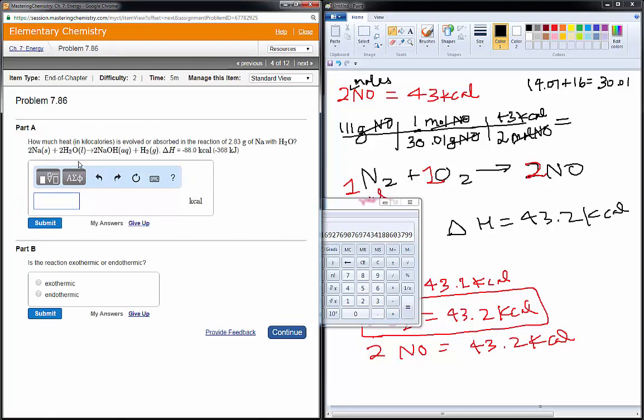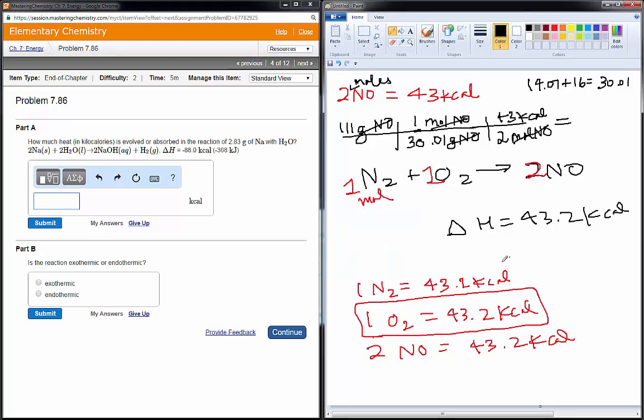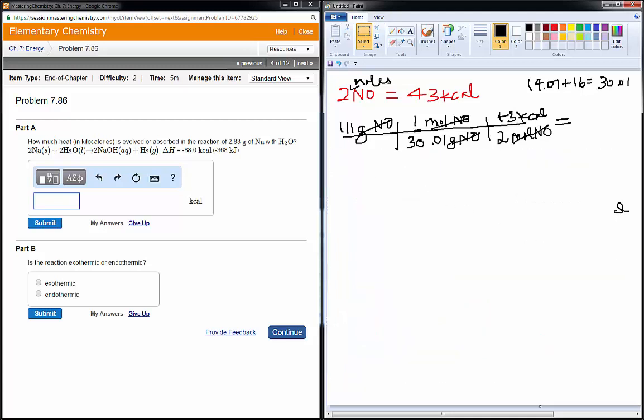Next, same kind of story. They want to know how much heat is evolved or absorbed in the reaction. When 2.83 grams of sodium react with water, they give us the equation, they give us the delta H. So, we're going to plug this in.